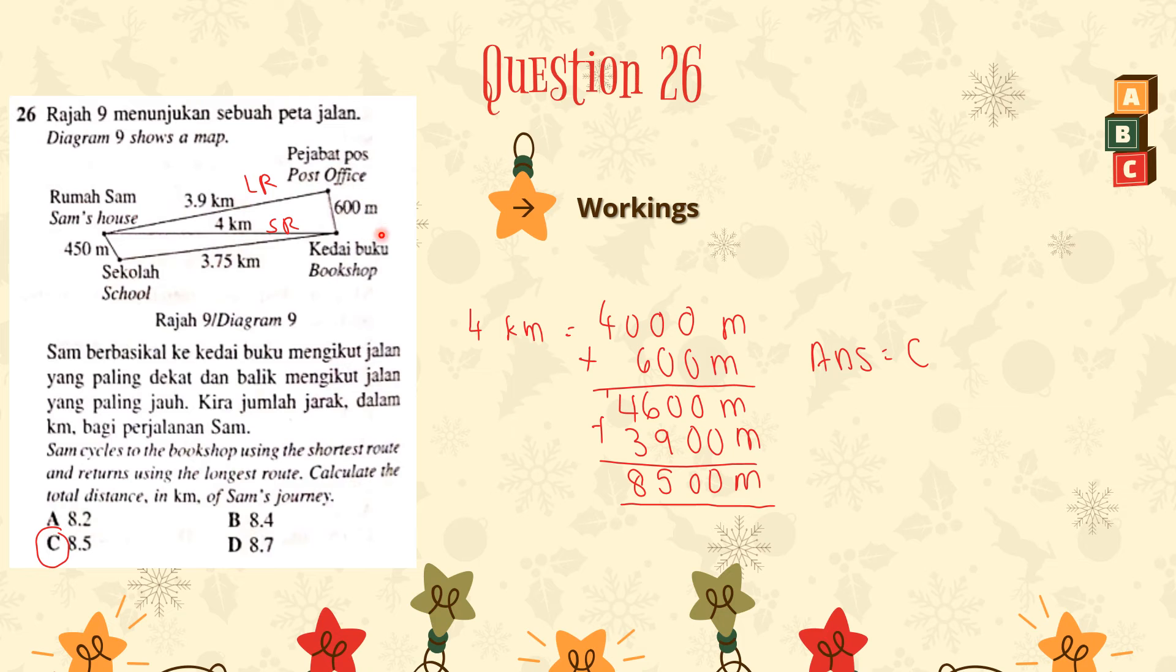Alright. Let's see this upper route here. In order for Sam to come to the bookshop, he has to go through the post office. Which means 4 km is the shortest route. And the longer route would be this route. Because we have to plus 3.9 km with 600 m, which would produce a longer length. So now we know which one is the shortest route and longer route.